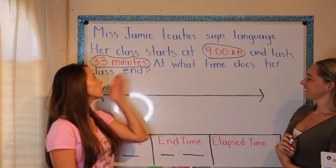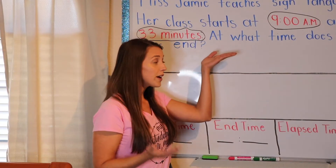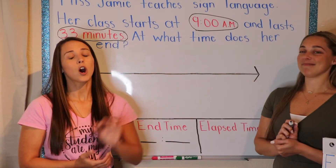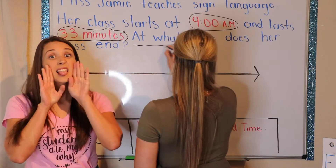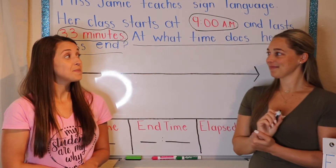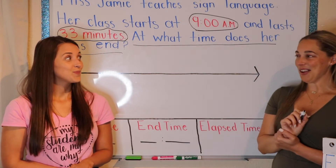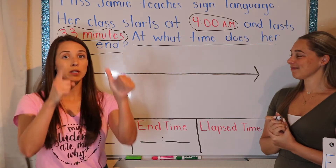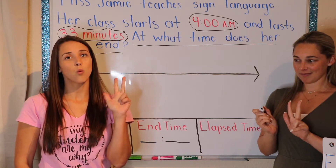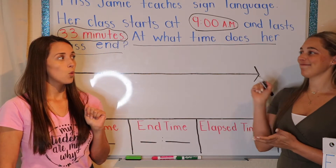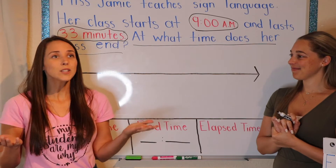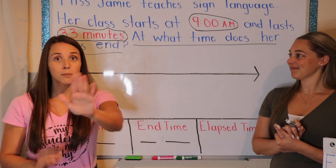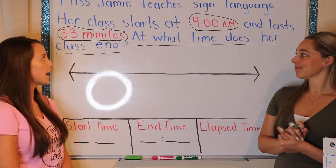And then, at what time does her class end? So why should we underline this whole sentence? Because it's your question. Because it's my question, and we always want to underline our question. So can you underline my question for me? Are we done? No. Good job, Ms. Jamie. What should we do next? We circle, we underline, and we're missing one key component — the star. What should we star? End. End, because that's what we need to find. We know my start time. We know my elapsed time. So now we need to stop, because we need to figure out my end time. Can you put a nice little star? There you go.